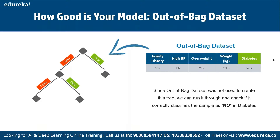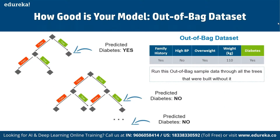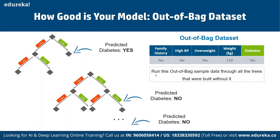The out-of-bag data set was not used to create the trees, so we can run it through and check if the trees correctly classify those samples. We run the out-of-bag sample through all trees that were built without it and choose the prediction with the most votes. If the votes favor 'no', the label 'no' wins. In this case, random forest correctly labeled the out-of-bag sample as 'no'. We repeat this for all data samples one by one to generate the best results.